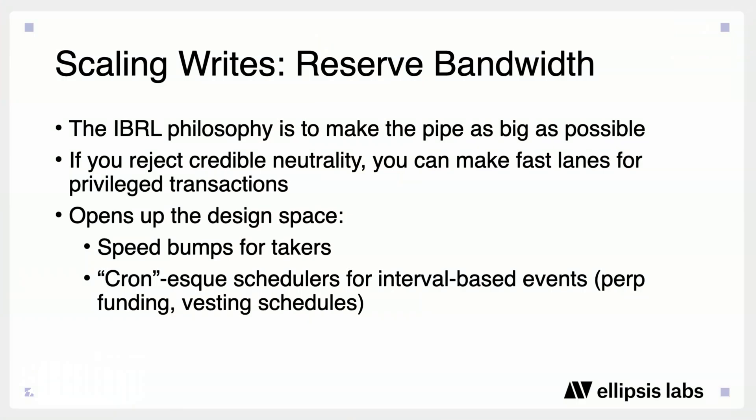The key idea is that you want to actually reserve bandwidth. The IBRL philosophy is to make the pipe as big as possible, but if you reject credible neutrality, you can make fast lanes for privileged transactions, which really opens up the design space. You can create speed bumps for takers to tilt the scales in favor of liquidity providers. You can also introduce things that look like cron jobs — interval-based events that ensure important transactions land when they need to.